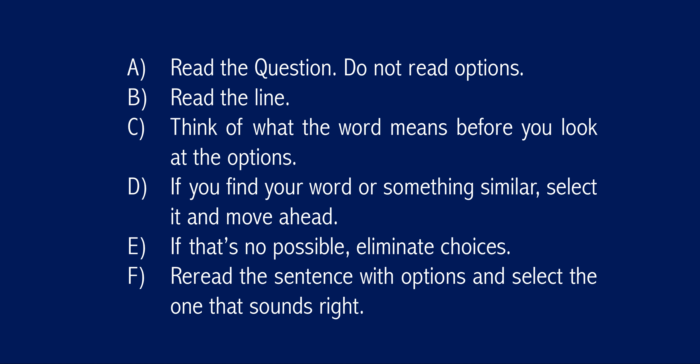Just to recap the strategy: read the question and avoid reading the options before you read the context. Read the context, then perhaps read the options. While reading the context, think about what the word already means. If you find that word in the options, select it and move ahead. If not, begin eliminating choices. You can try looking at which word fits semantically, but that's not always the best strategy. Select the word that's best for the given context. The next video will deal with what a word suggests about the tone or meaning of a certain passage. See you then!